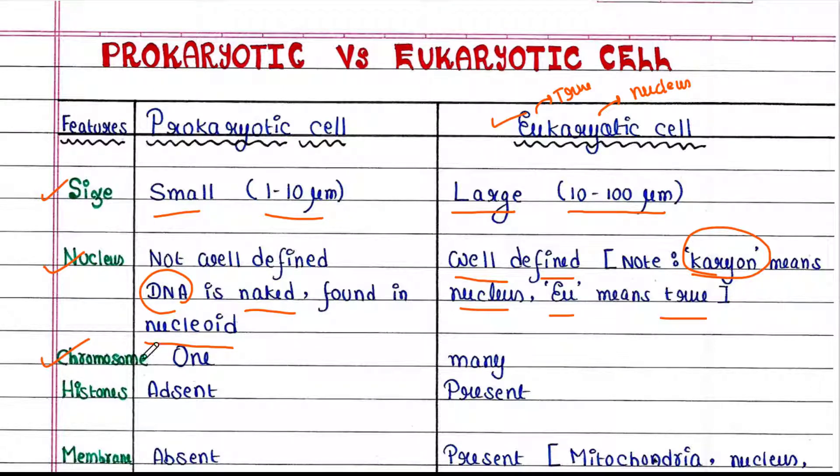Let's talk about chromosomes. Generally, prokaryotic cells contain only one chromosome, and eukaryotic cells contain many chromosomes.